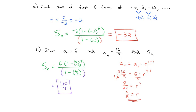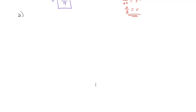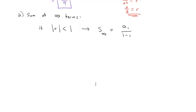What's special about a geometric series is that it's possible to quickly add up an infinite number of terms. There are two cases to watch out for: if the absolute value of the ratio is less than 1, the sum of the infinite terms equals the first term divided by 1 minus the ratio. We say this converges, or adds to a specific number.